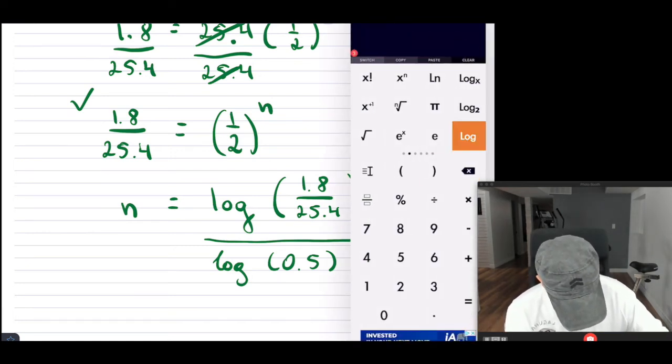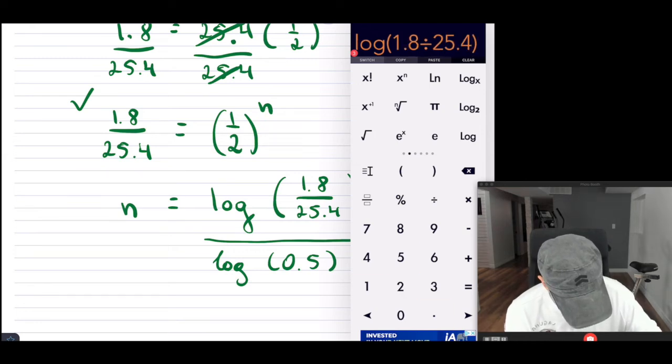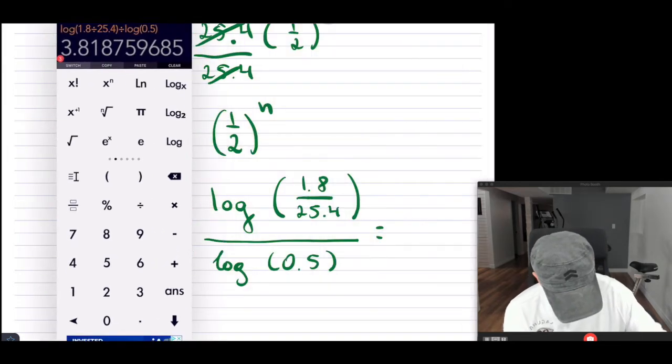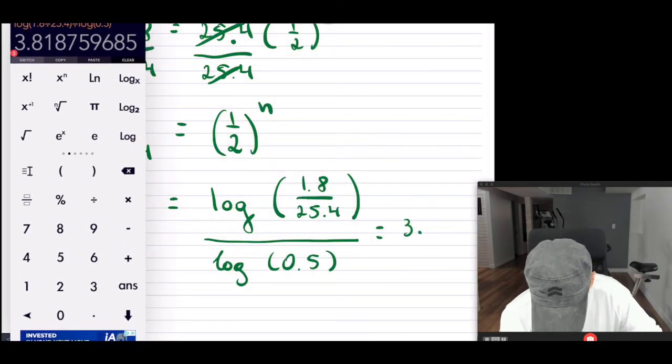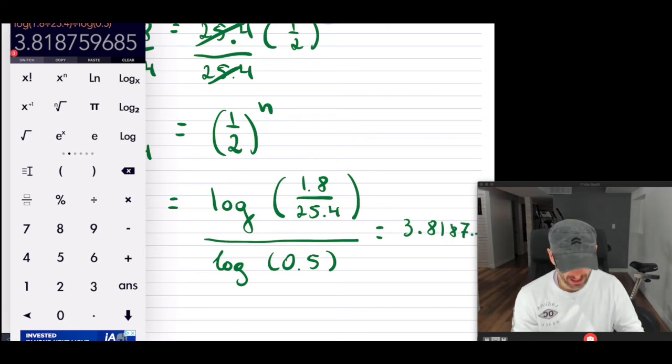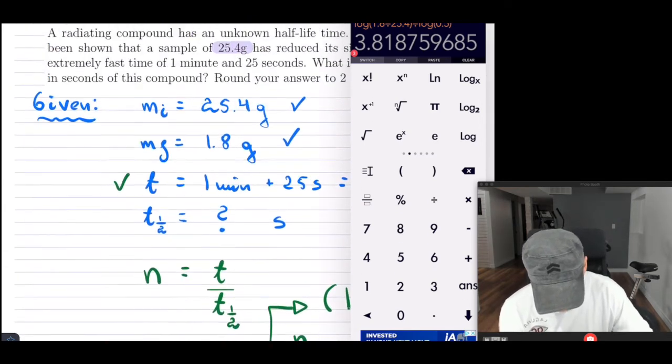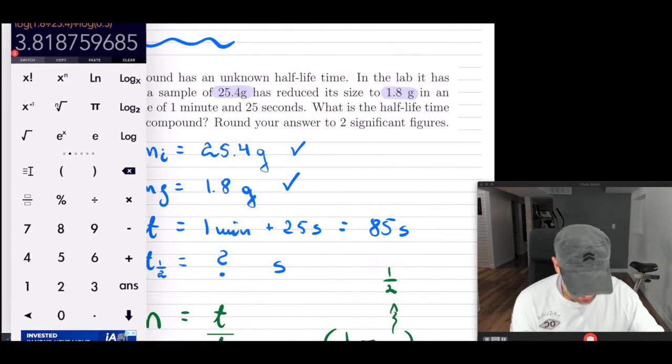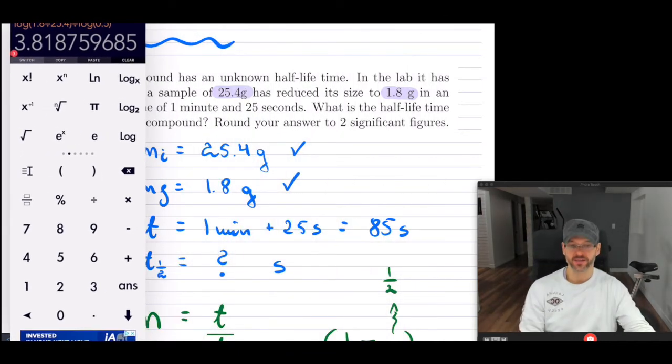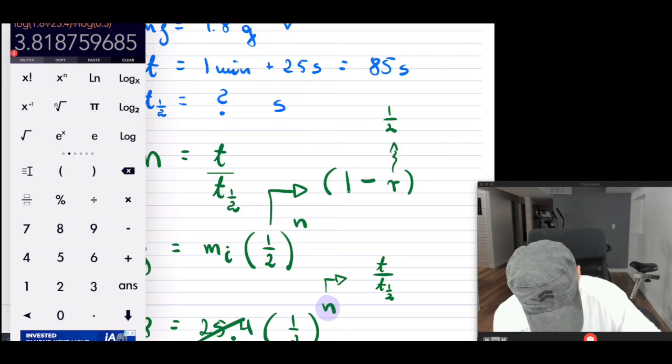So let's see what this gives me. So log of 1.8 divided by 25.4, and that is divided by log of 0.5. So this gives me, I'm going to keep those in there, 3.8187, and so on. I'm going to keep it on the calculator. Now, the reason why I'm keeping it on the calculator, because they're asking me for what is the half-life time.